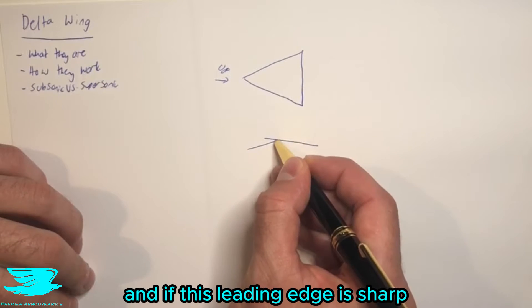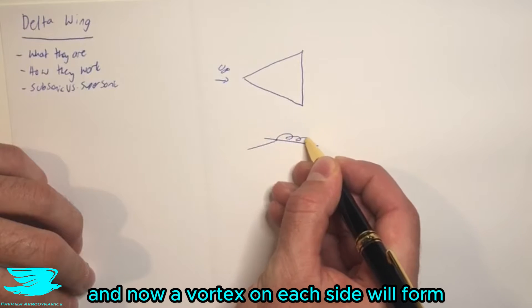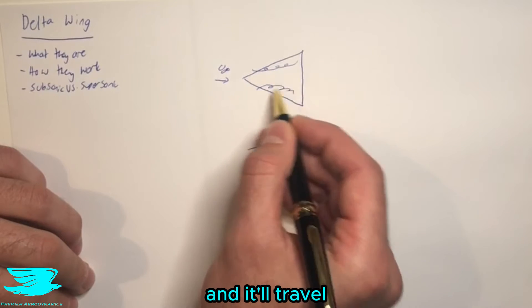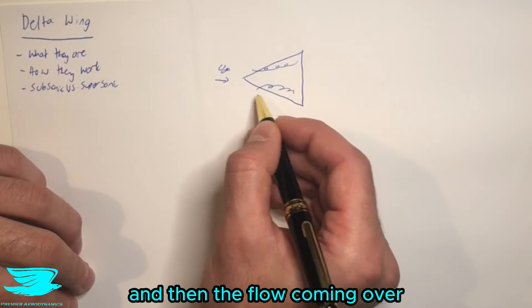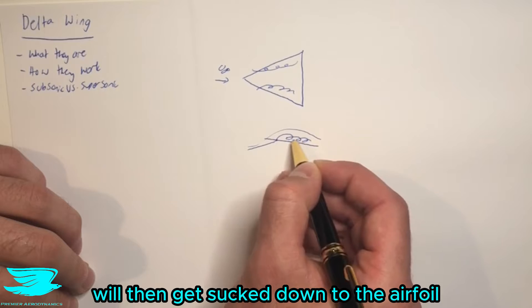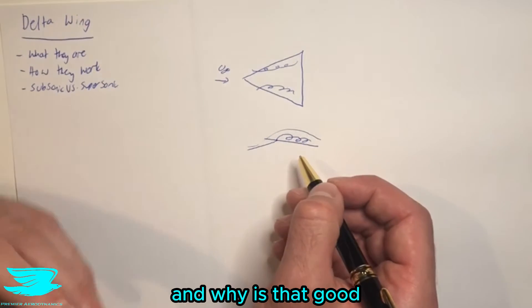So we have the flow coming along here, and if this leading edge is sharp, the flow will detach, and now a vortex on each side will form, one this way and one this way, and it'll travel down fairly close towards the leading edge, hugging that, and then the flow coming over the rest of the airfoil will then get sucked down to the airfoil because this vortex is a low-pressure core.